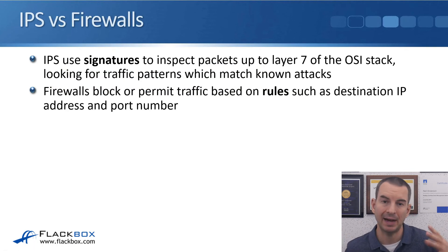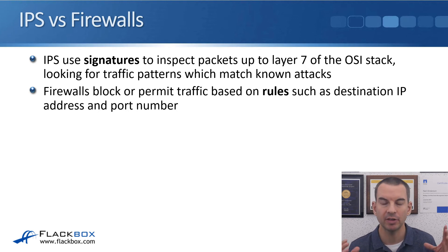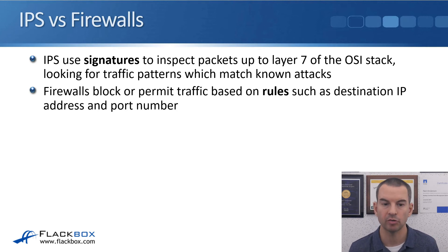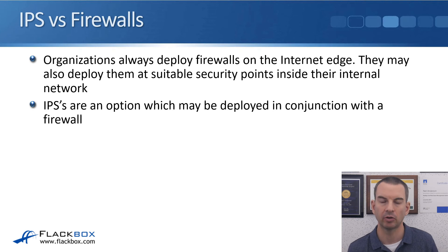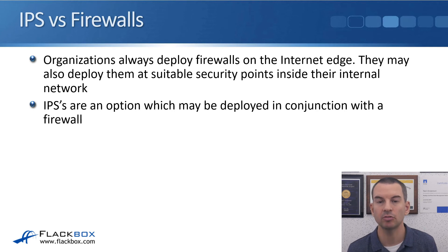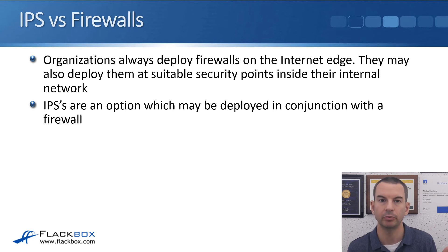Comparing IDS and IPS with firewalls: an IPS uses signatures to inspect packets up to layer 7 of the OSI stack looking for traffic patterns which match known attacks. Firewalls block or permit traffic based on rules such as destination IP address and port number — so an IPS uses signatures, a firewall uses rules. Organizations will always deploy firewalls on their internet edge; there's no way an organization would connect to the internet without a firewall to protect themselves.